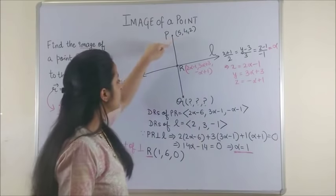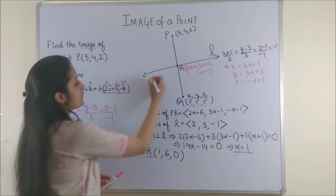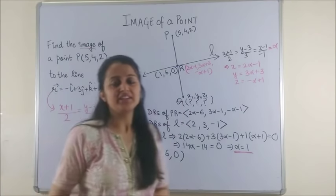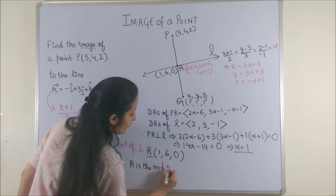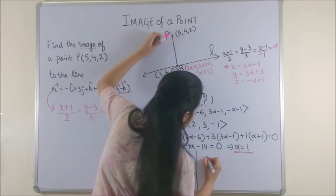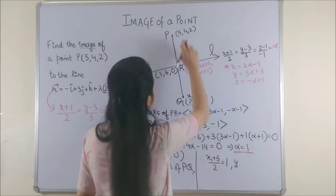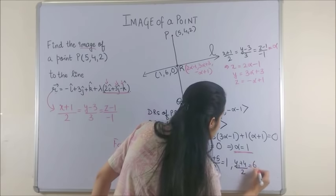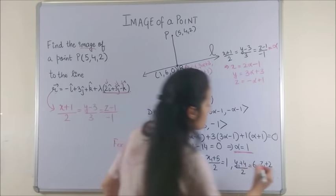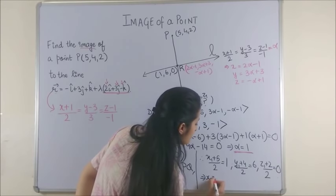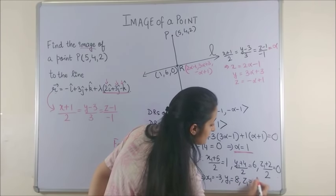And now since R is the middle point of PQ, suppose I represent these as x₁, y₁ and z₁. You know the middle point which we just calculated as (1, 6, 0). Now you can very conveniently find Q. So we say since R is the middle point of PQ, therefore you know (x₁ + 5)/2 is the same as 1. Similarly, (y₁ + 4)/2 would be equal to 6 and (z₁ + 2)/2 should be equal to 0. From here we get x₁ to be -3, y₁ to be 8 and z₁ to be -2.